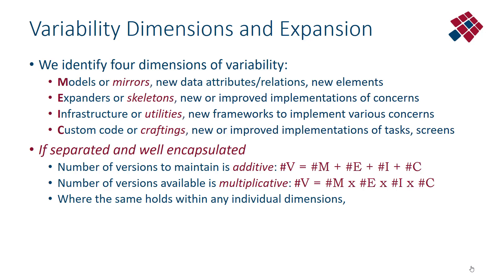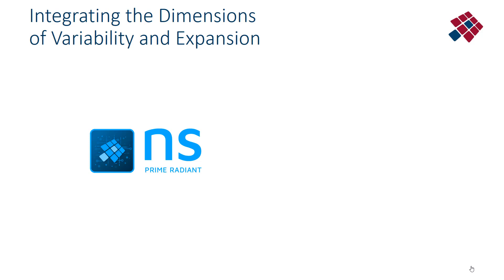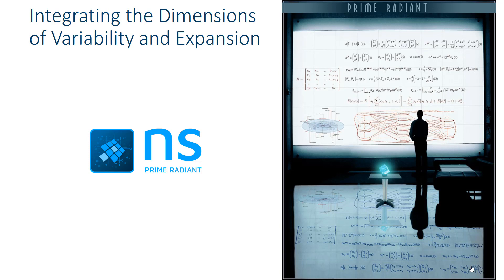If we don't separate and encapsulate these dimensions of variability well, we will have to carry the burden of the product of the possible versions and variations. In order to integrate these dimensions of variability and expansion and to have a structured overview, we developed the prime radiant. The prime radiant is named after the famous device in the Foundation series of Isaac Asimov, where it is a device that allows you to see and distinguish structure in an otherwise chaotic and complex universe. The prime radiant is a tool that allows you to master the various dimensions of variability, to have a structured overview and to combine them without them becoming entangled.